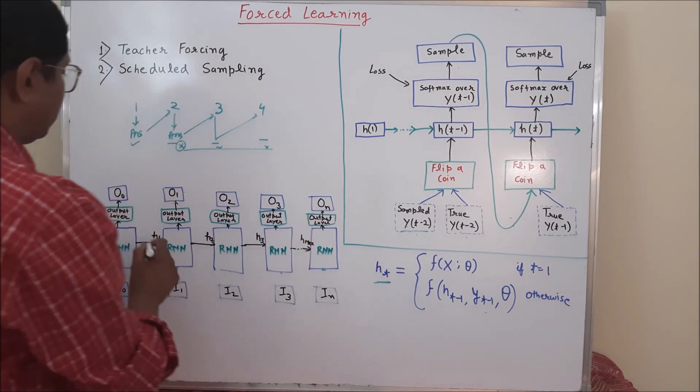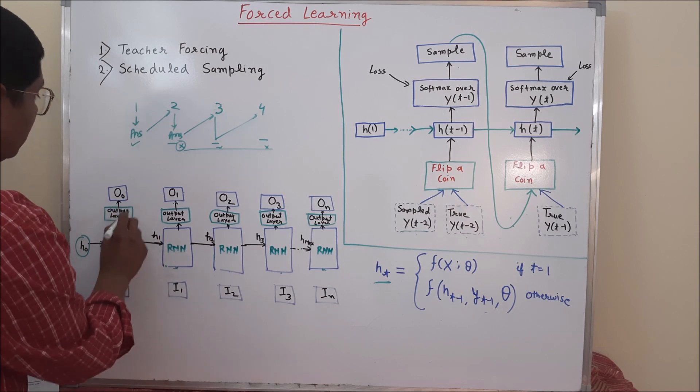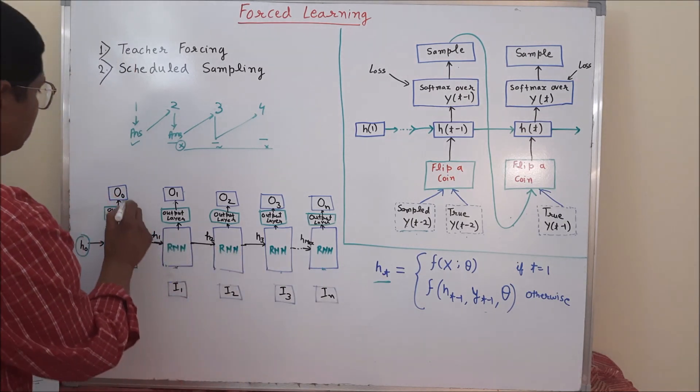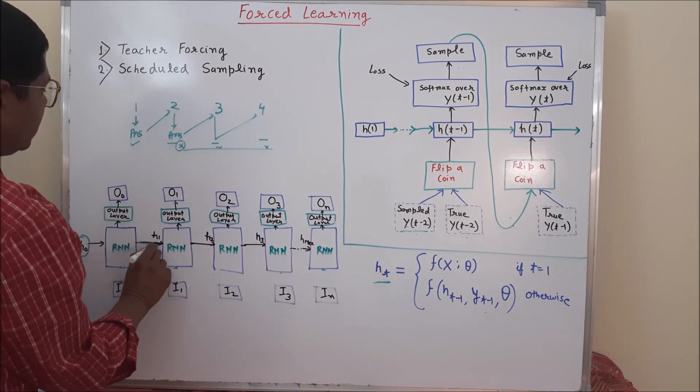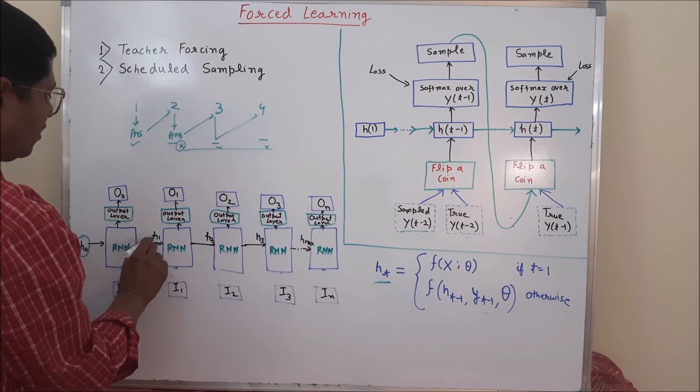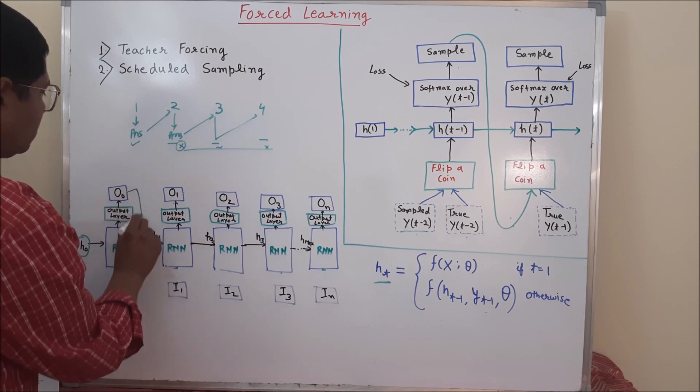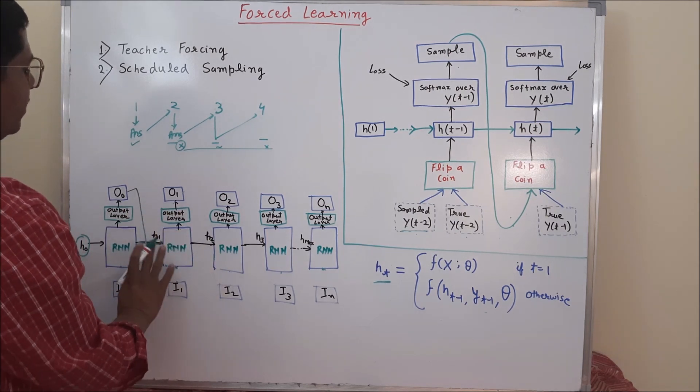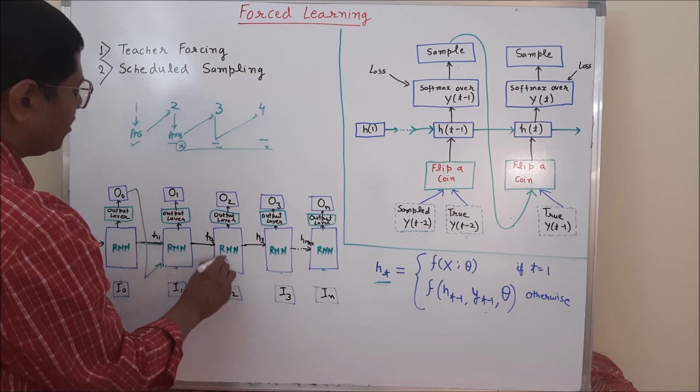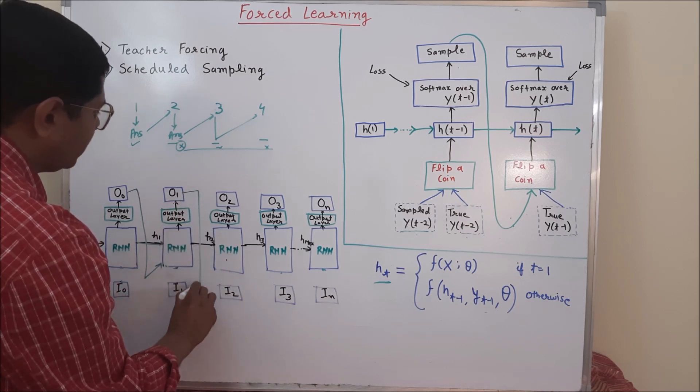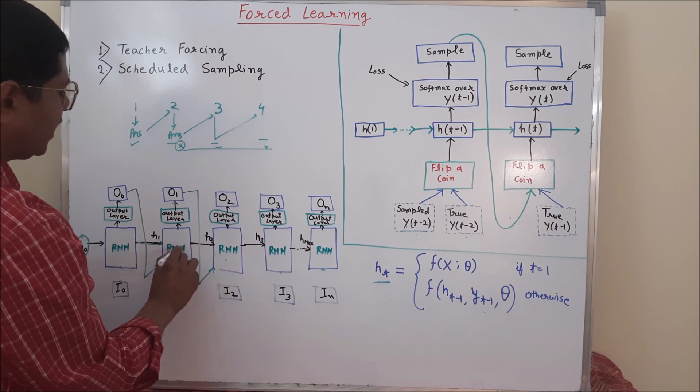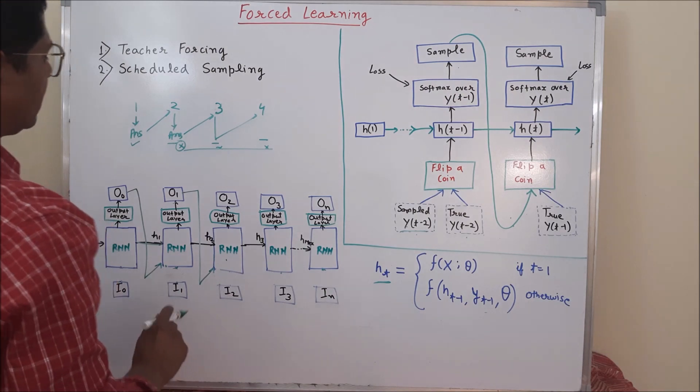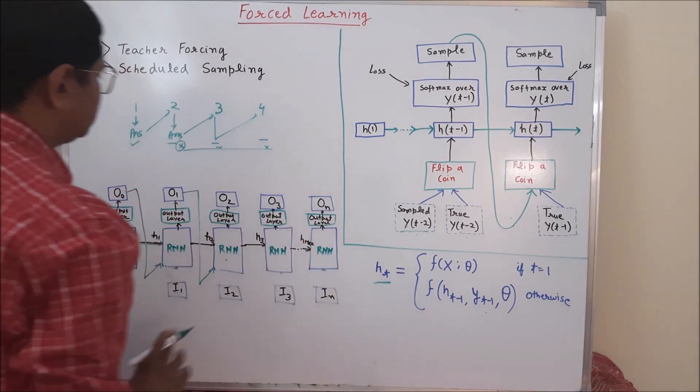But to generate the output, the traditional RNN generally takes two different inputs. Like hidden layer output from previous time steps and output from previous time steps. So it will take two inputs. Again, this block will take input from previous output and input from previous hidden layer output. So, it will propagate like this.